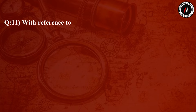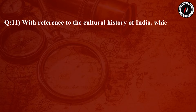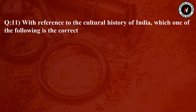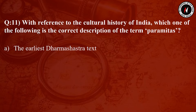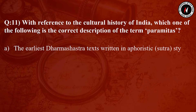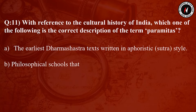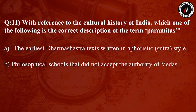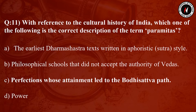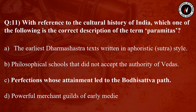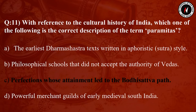Question number 11: With reference to the cultural history of India, which one of the following is the correct description of the term Paramitas? Option A: the earliest Dharmashastra text written in aphoristic or Sutra style. Option B: philosophical schools that did not accept the authority of Vedas. Option C: perfections whose attainment led to the Bodhisattva path. Option D: powerful merchant guilds of early medieval South India.